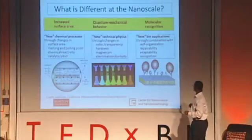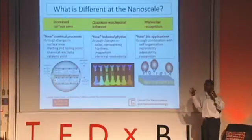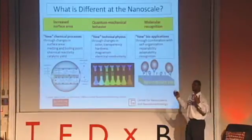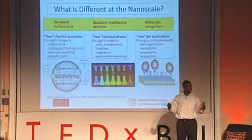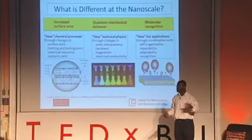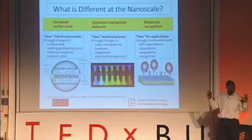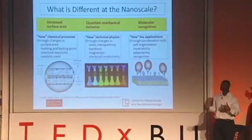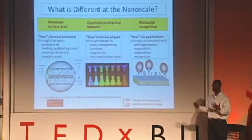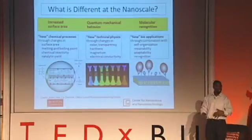Why is that important? If you have biomarkers or targets — proteins that get overexpressed for a cell when you have a disease like inflammation — you can target multiple proteins with different colored particles and get a more accurate, more complete picture of what that disease is.